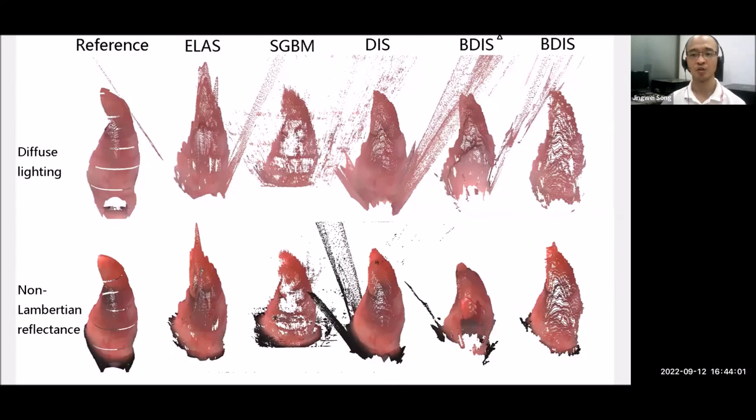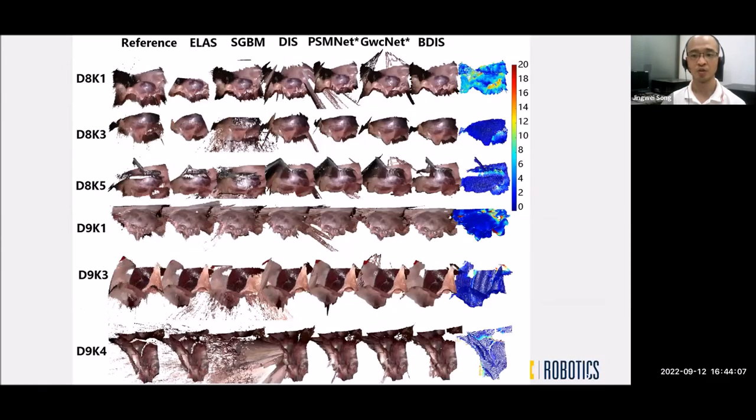The figure shows the sample reconstruction results on the synthetic datasets. The figure shows the sample reconstructions on the in vivo datasets. The leftmost column is the ground truth depth. The rightmost column is the error map in millimeter. Our method achieves satisfying results comparing with ELAS.